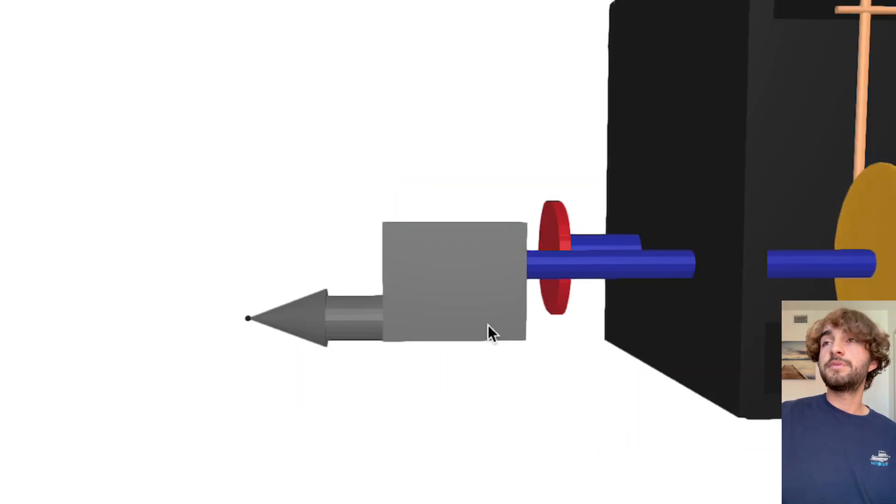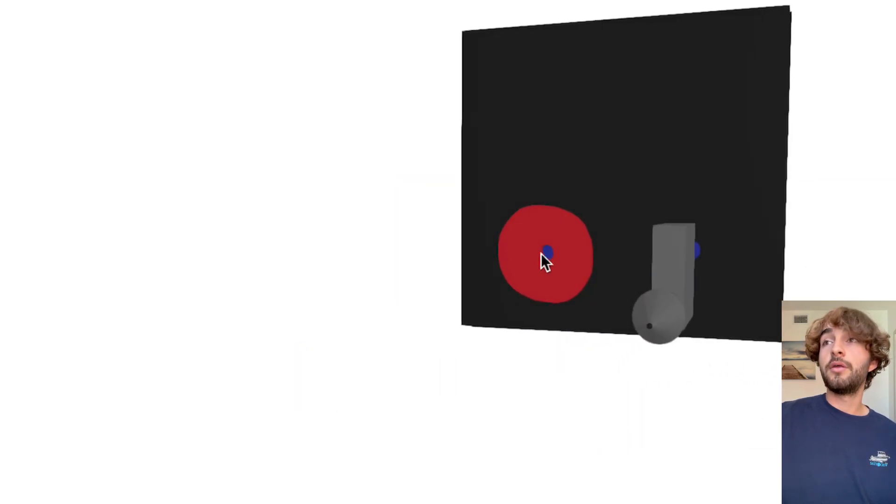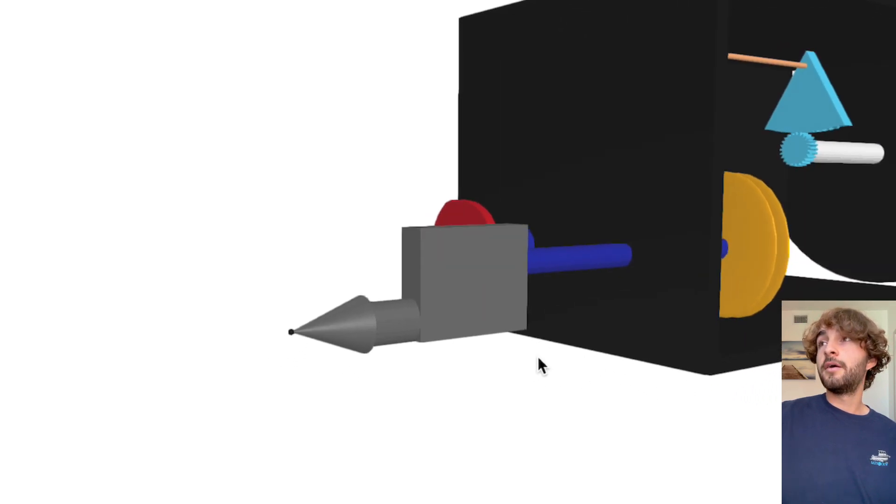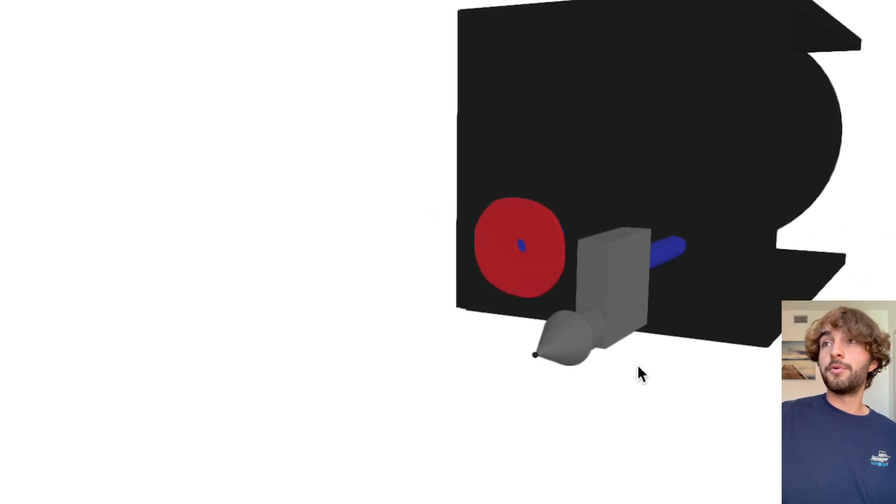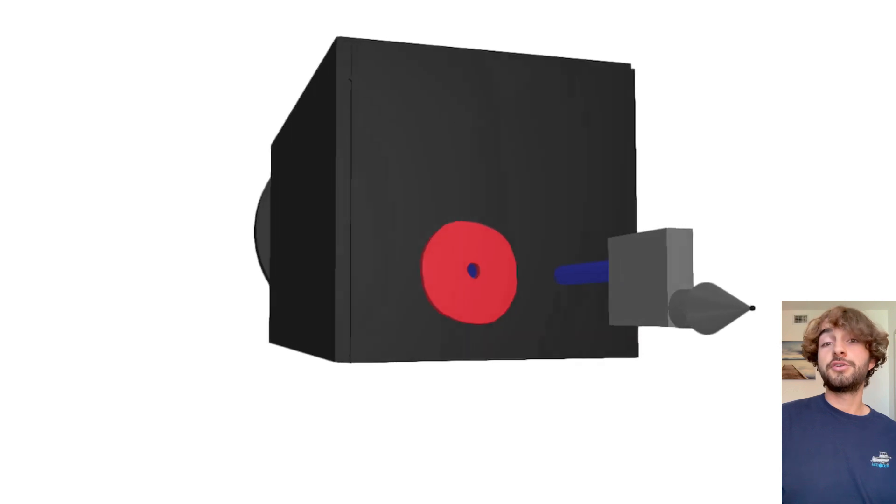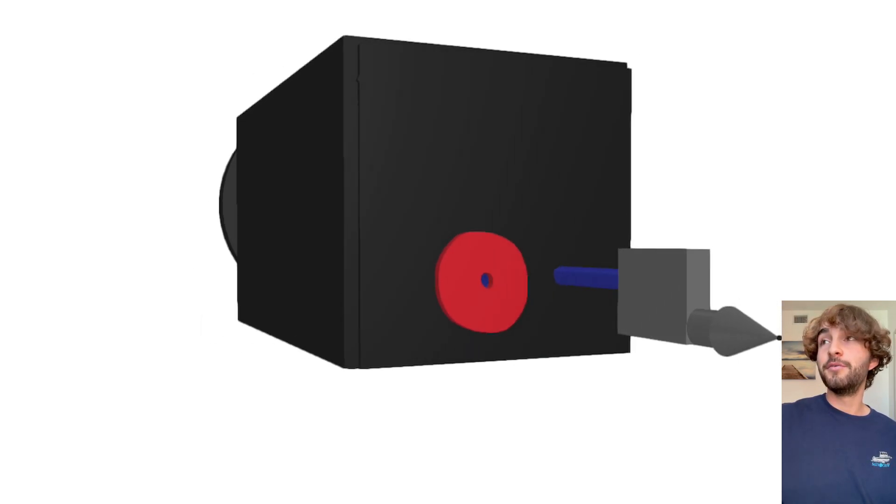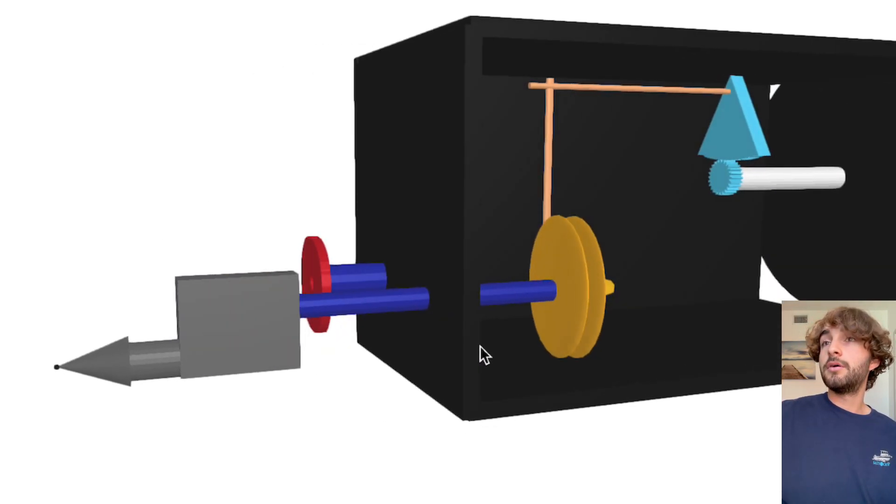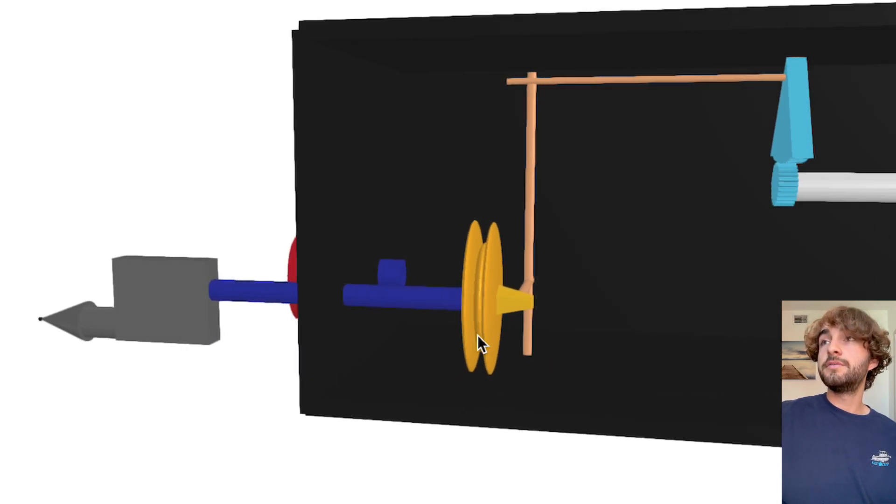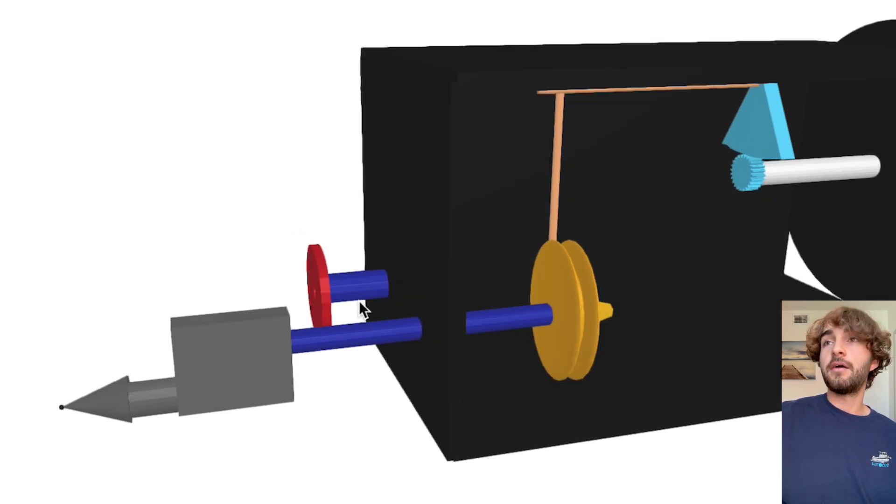And then on the flip side, we got the static port and this janky looking pitot tube. This program really only lets me do shapes so I couldn't really make a perfect pitot tube. So this is what we're going to have to work with, but we got the pitot tube here, the static port and the diaphragm.